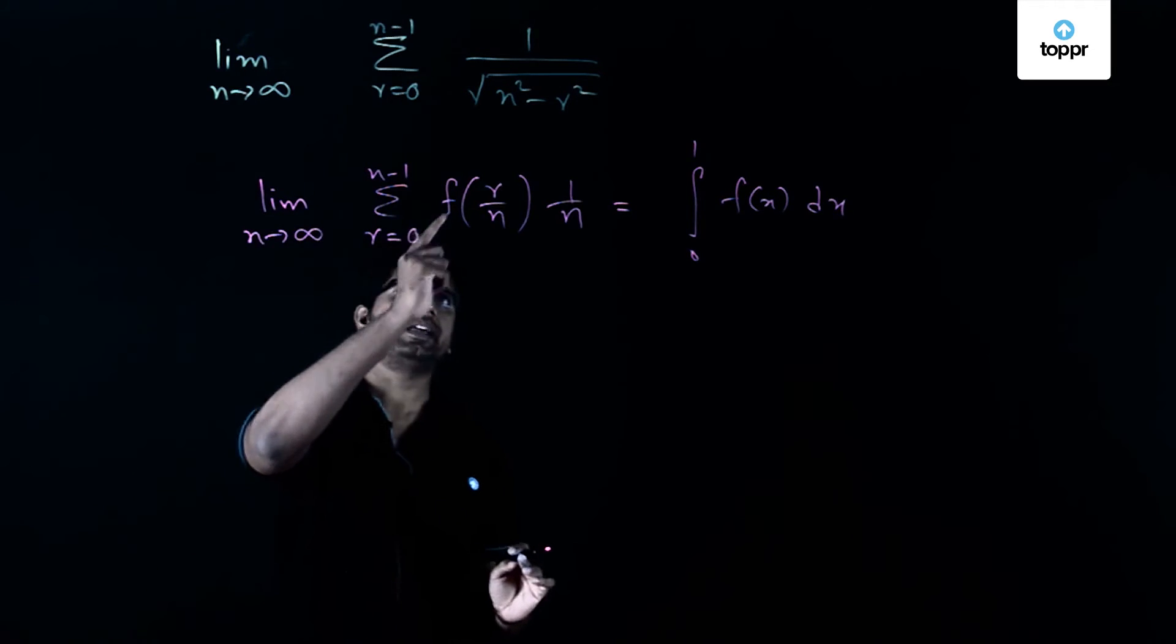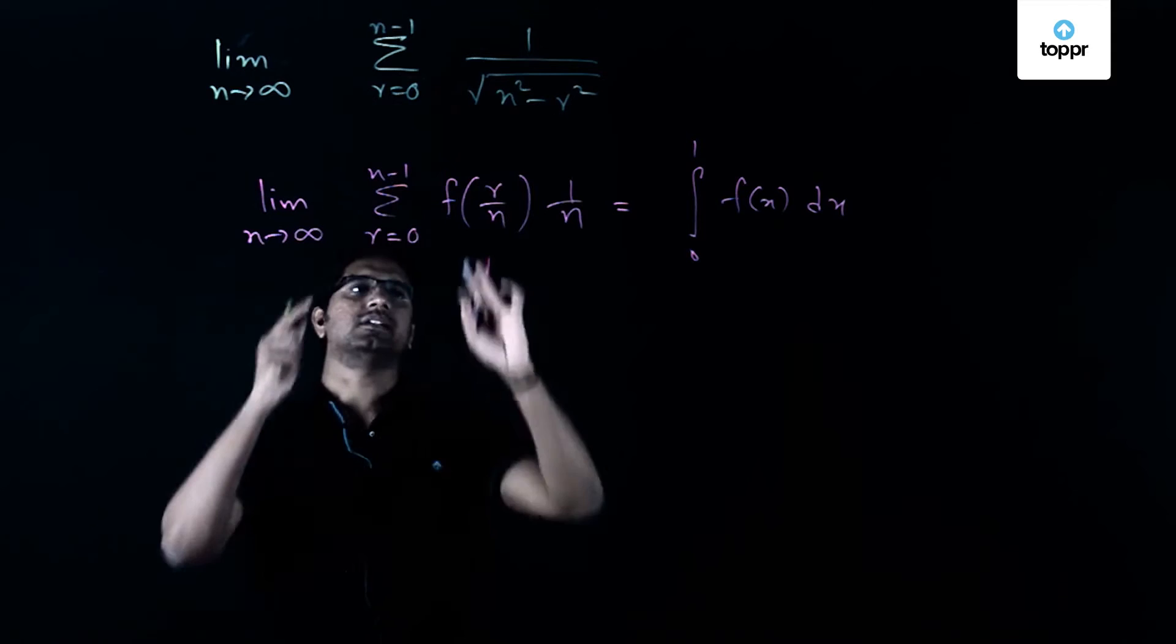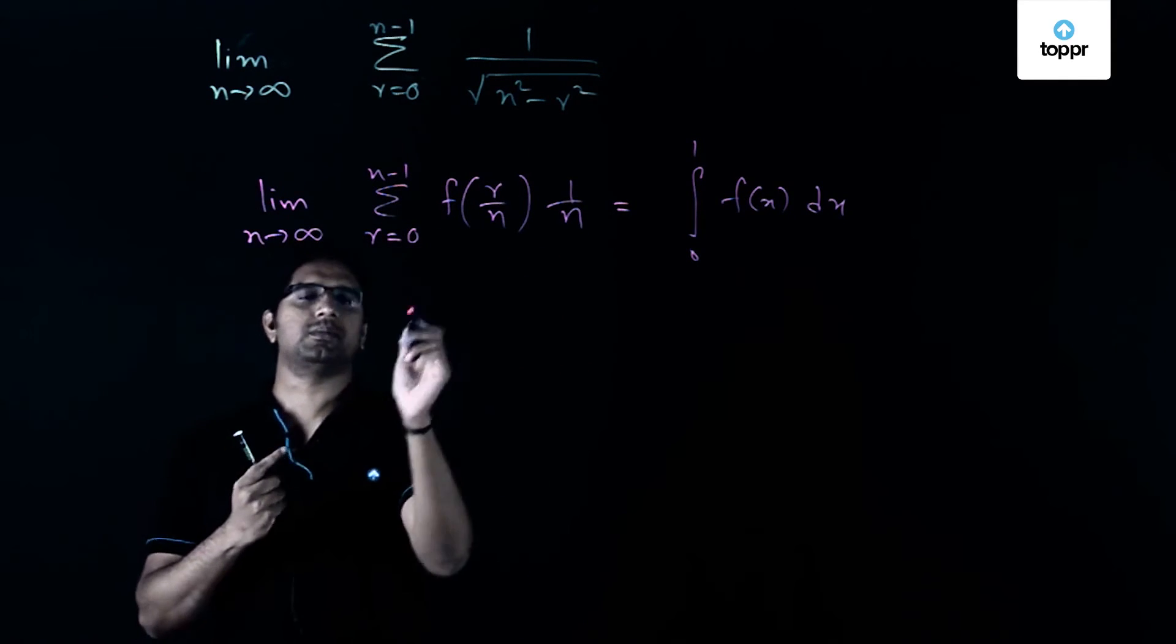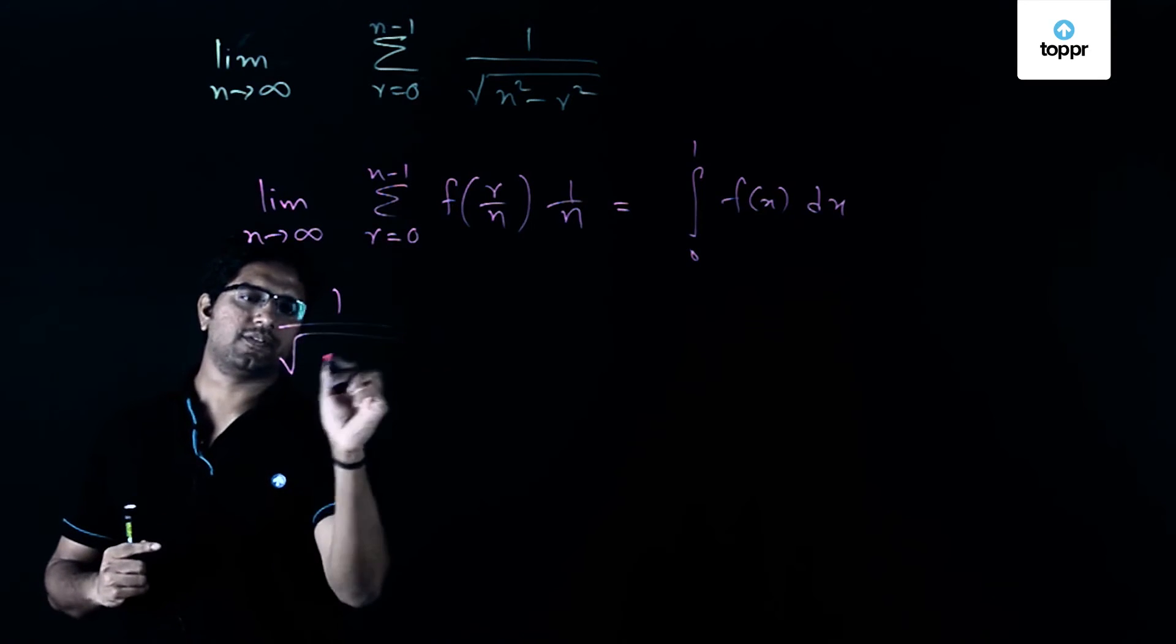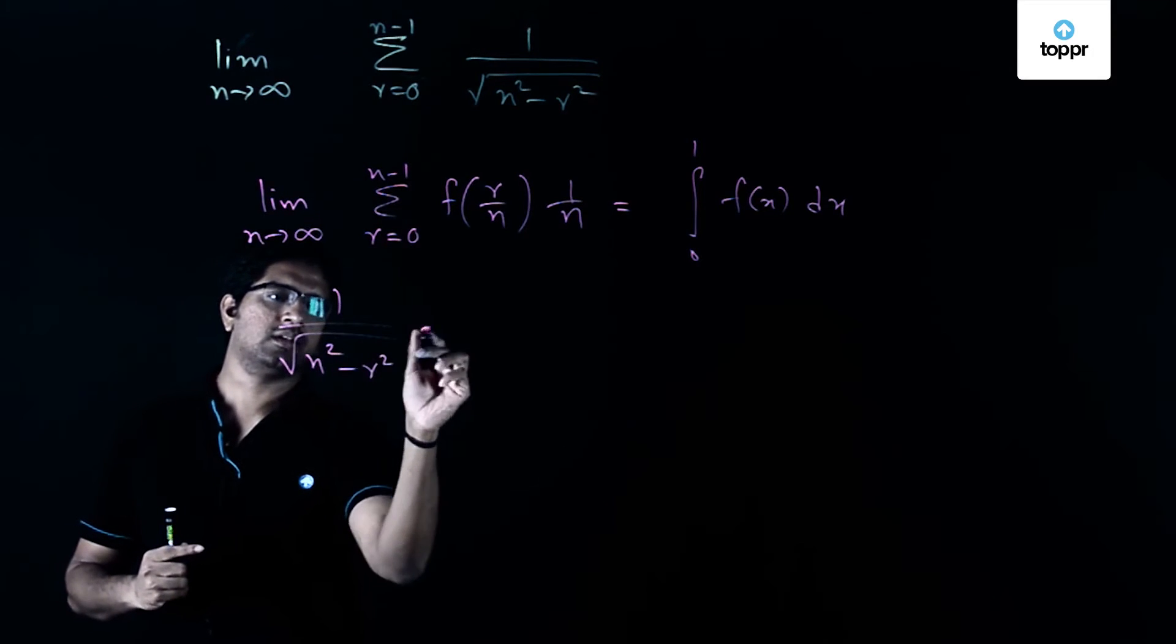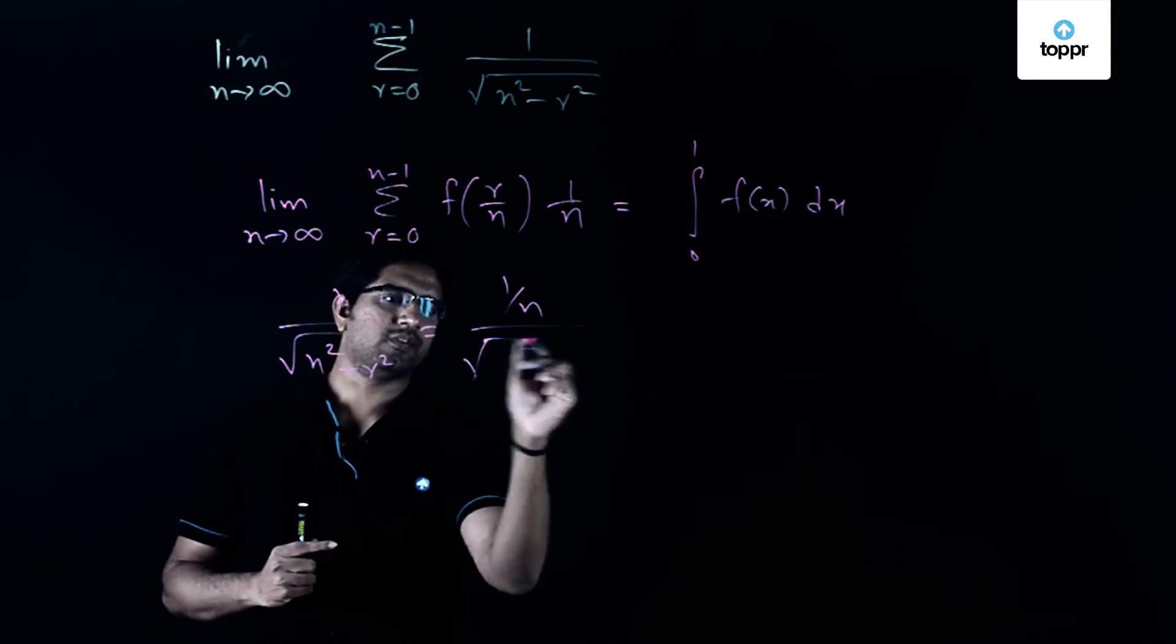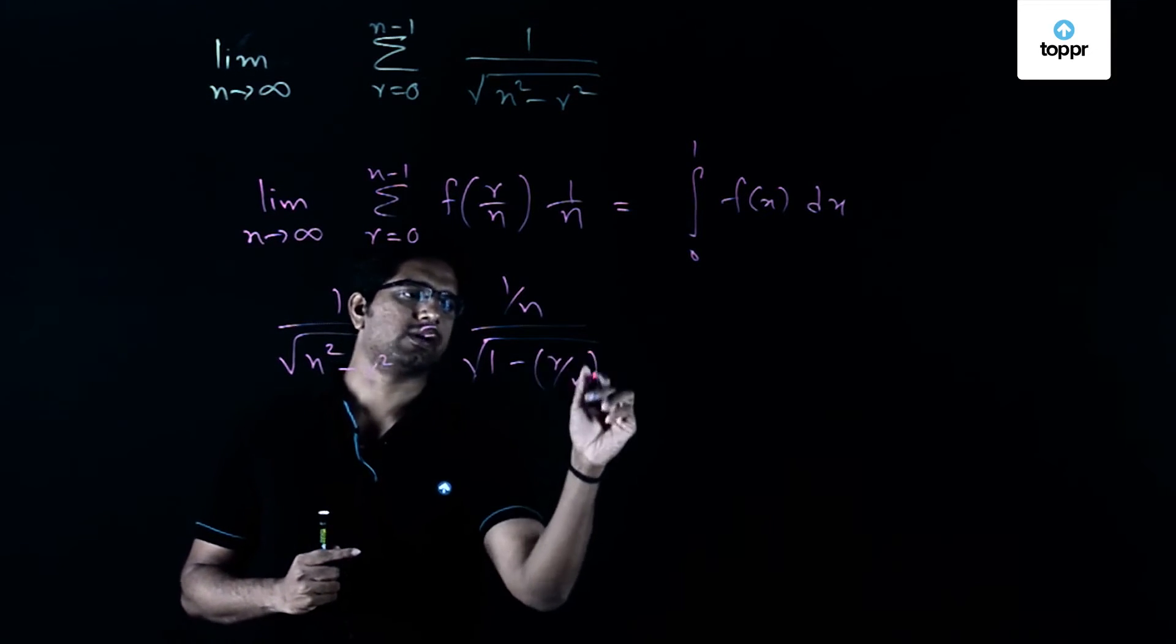The ultimate aim is to convert the given series into this familiar form. So how can we make that? That is straightforward because 1 by root of n square minus r square can be written as 1 by n times square root of 1 minus r by n the whole square.